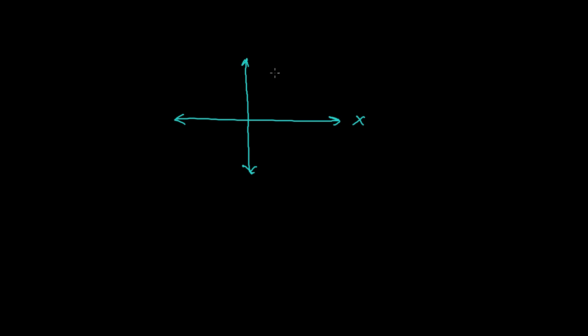In this video we're going to learn about the sign of the trigonometric ratios. Let me tell you — if I have a coordinate axis, this is my x-axis, this is my y-axis, this will be my negative x-axis, this will be my negative y-axis. If I have a line OP making angle theta, from the positive x-axis going to the positive y-axis is called the first quadrant, this part is the second quadrant, this is the third quadrant, and this is the fourth quadrant.